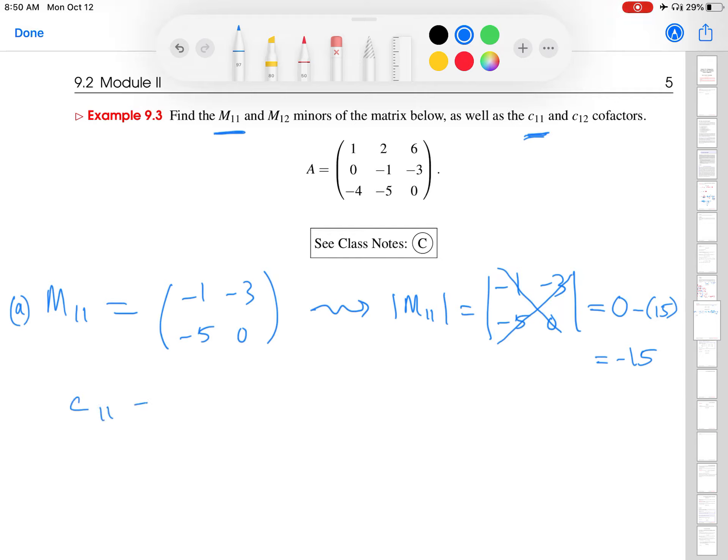Great. And then I want to find the C11 cofactor. So C11 is negative 1 raised to the 1 plus 1 times the determinant of the M11 matrix, the minor. Okay, so I get negative 1 squared, that's 1, times the determinant of M11. And that was negative 15. So that gives me negative 15. Okay, so this is my minor, this is my cofactor.